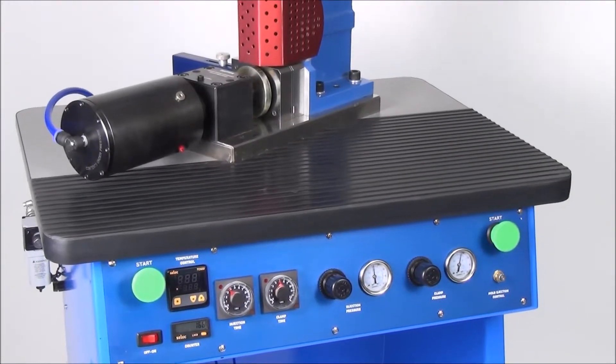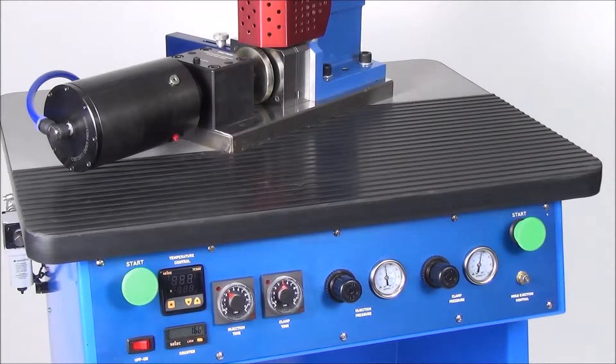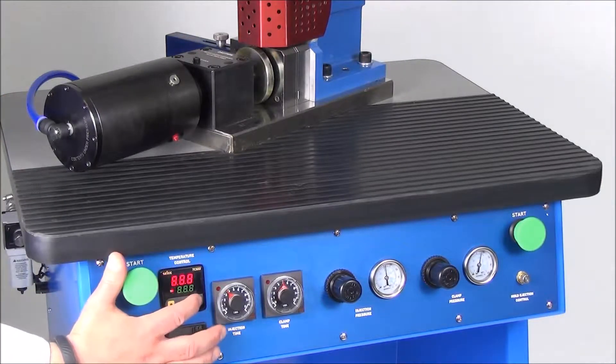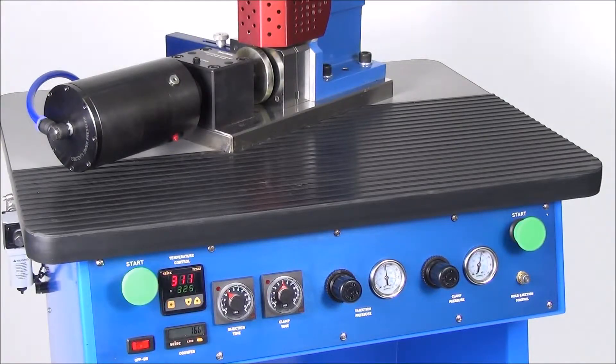First, turn the machine on and set the injection chamber temperature controller to the desired temperature. For this demonstration, we are using a clear polyethylene and set up the temperature accordingly. We add plastic into the heating chamber by depressing the foot air operated hopper.